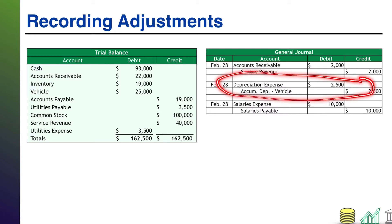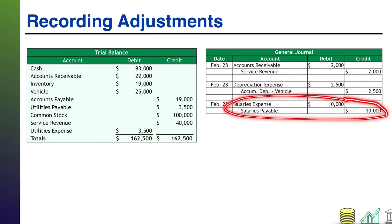We recorded depreciation on a vehicle that we have that depreciates over time, and we recorded some salaries expense — we must have had some workers that worked during the final few days of the period. They haven't been paid yet, but we wanted to make sure we got that expense in the right period. So three adjusting entries.